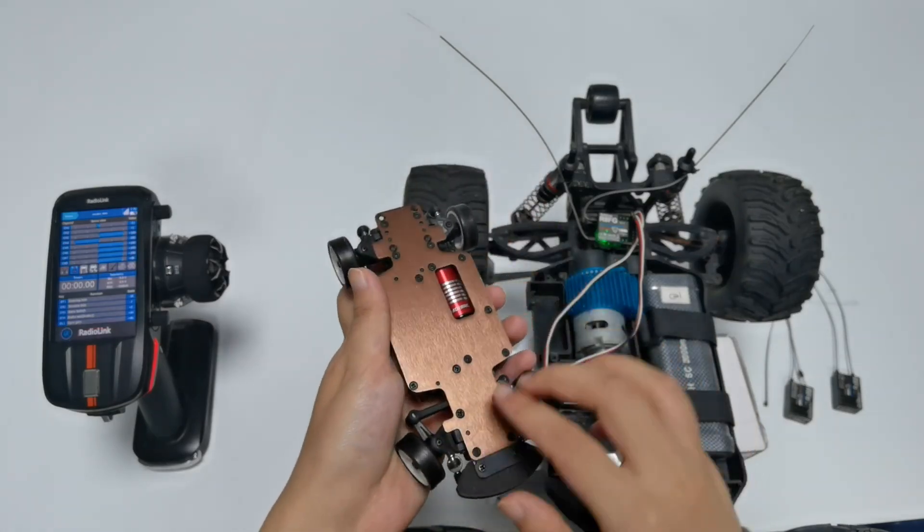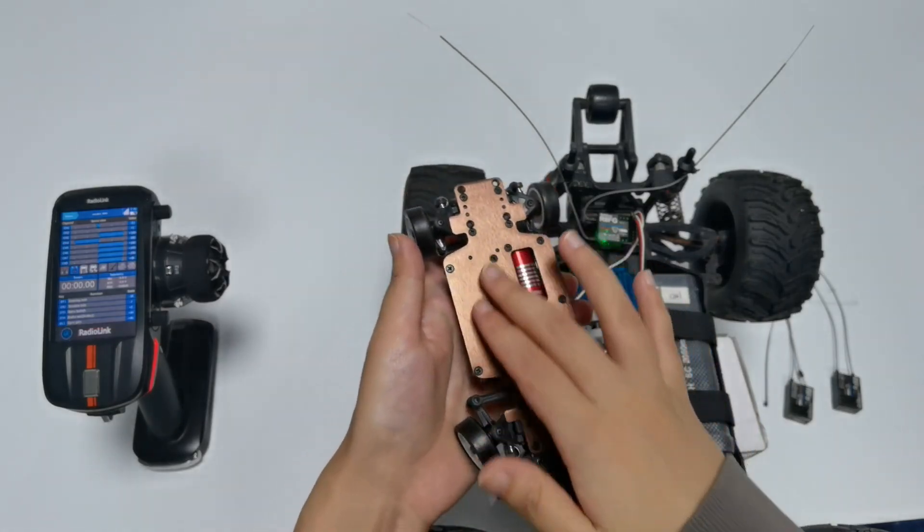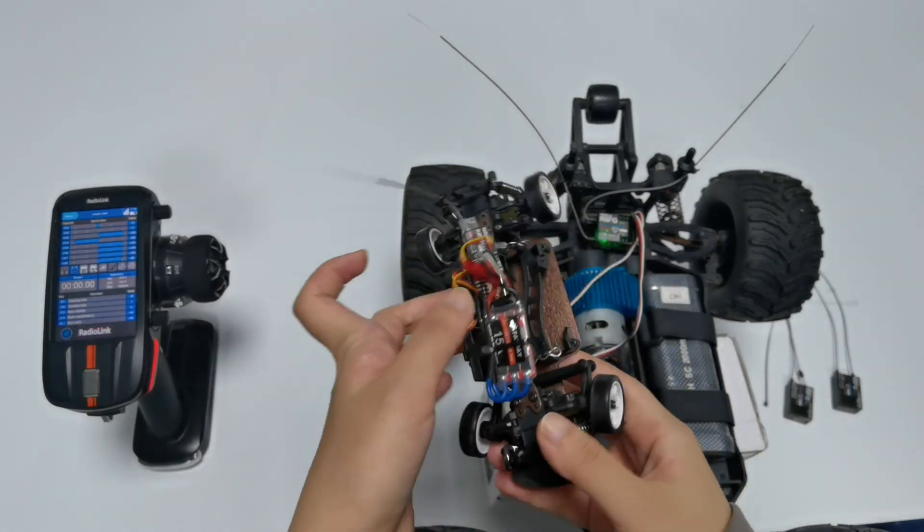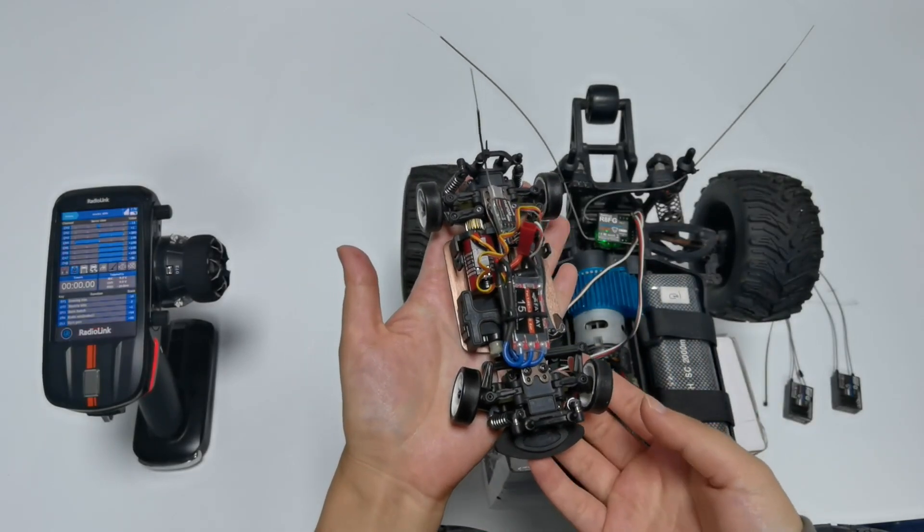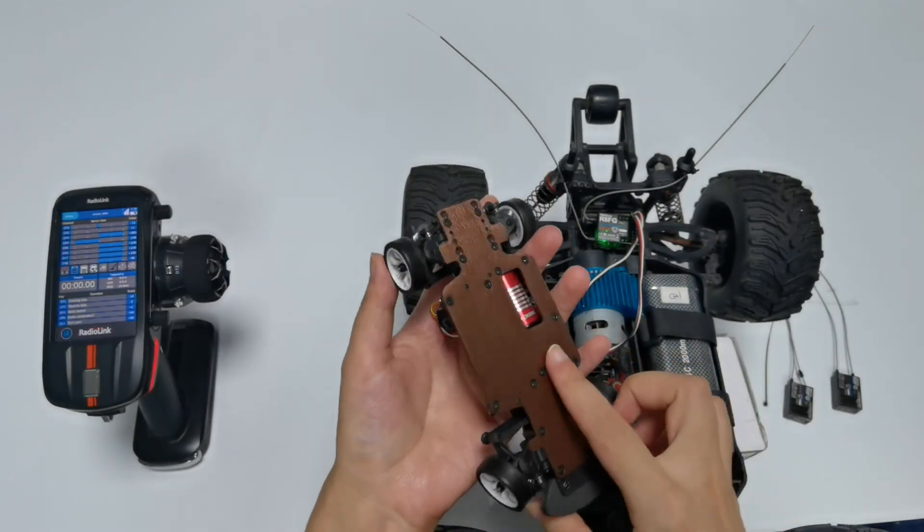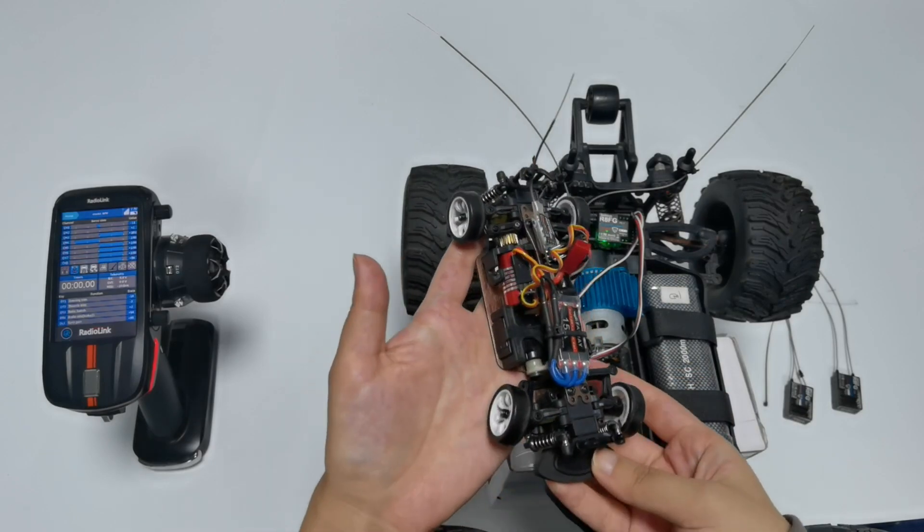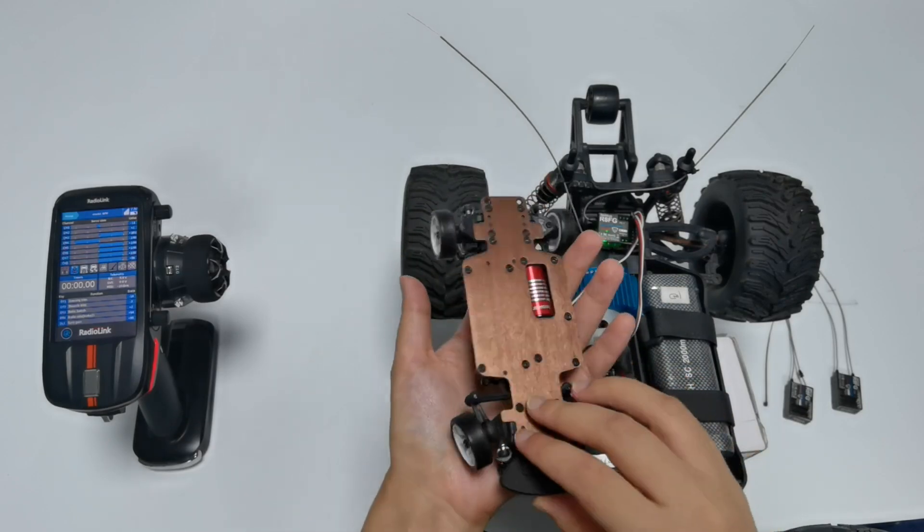By the way, we have found there are some metal parts on this mini car. So when installing the receiver, make sure the antenna is apart from the metal parts because the metal parts will affect the signal transmission. I will show it.